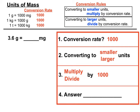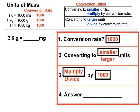Let's have a look at each one in turn. We have 3.6 grams and we want to convert that into milligrams. The conversion rate will be a thousand. Milligrams are smaller than grams, so we're converting to smaller units, which means we'll be multiplying by the conversion rate — multiplying by a thousand. To multiply by a thousand, you move the decimal point three spots to the right, giving a final answer of 3,600. So 3.6 grams equals 3,600 milligrams.